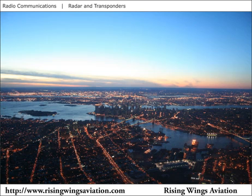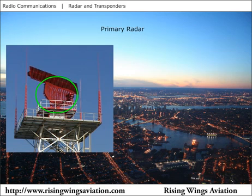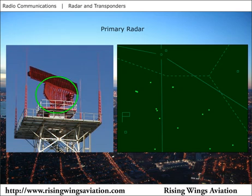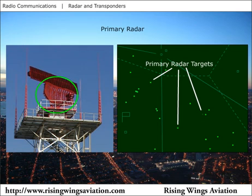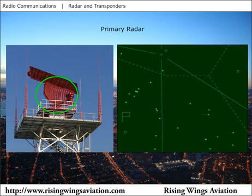Two types of radar systems are used to aid air traffic controllers in providing advisory and separation services to pilots: primary and secondary radar. The primary radar system transmits pulses of radio waves, then listens for these pulses to be reflected back and received. Metal objects like airplanes reflect this radio energy well and can be detected by primary radar. Since the radio waves are transmitted in a particular direction, the direction of the primary radar reflection is known. The range of the radar return is determined by marking the time between the transmission and reception of the radar return. Since radio waves travel at the speed of light, the distance to the radar return can be calculated.